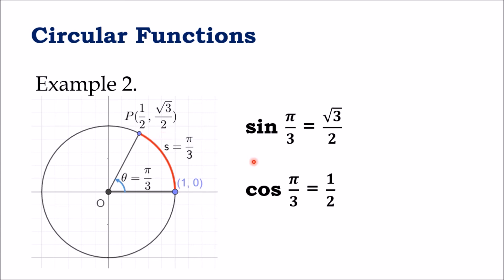This clearly shows that sine π/3 is equal to √3/2 and cosine π/3 is equal to 1/2. We will learn more on the exact values of the circular functions through our next lesson. Thank you.